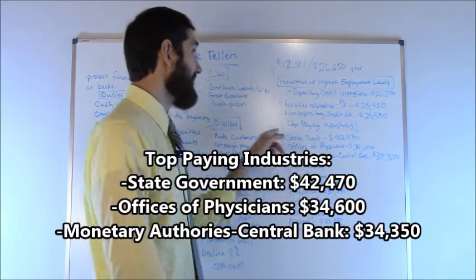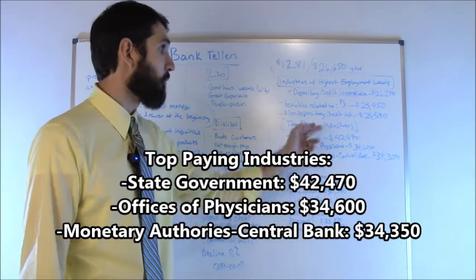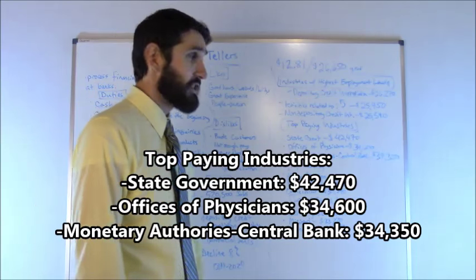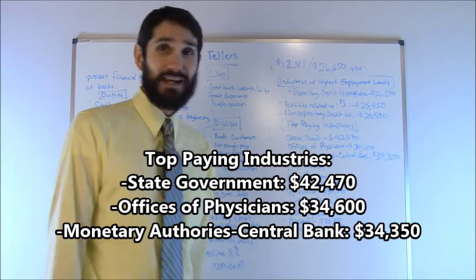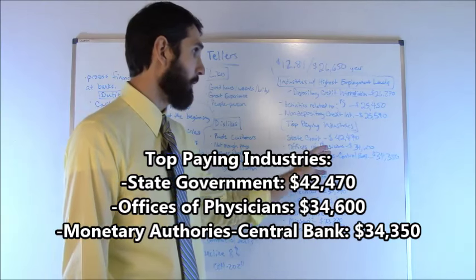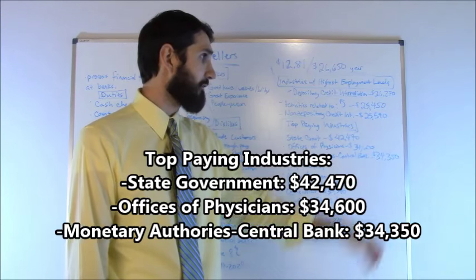What about the top paying industries? State governments came in at number one $42,470. Offices of physicians came in at number two $34,600. And then monetary authorities at central banks came in at number three $34,350.